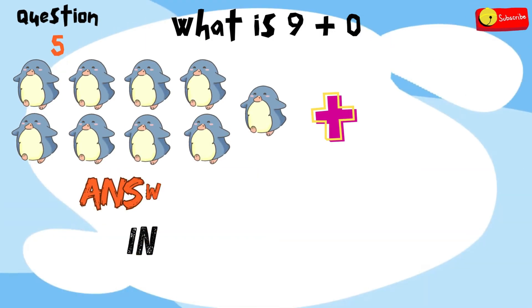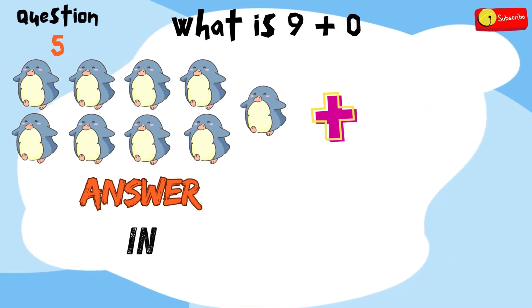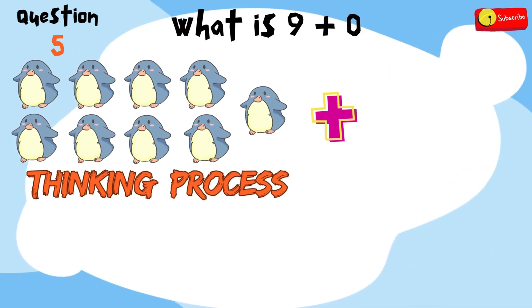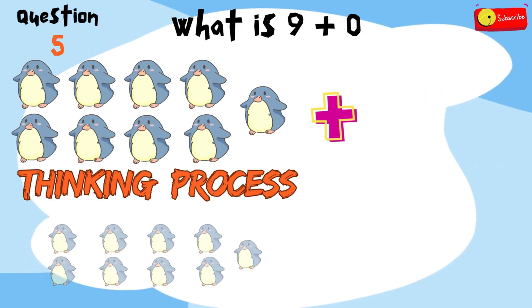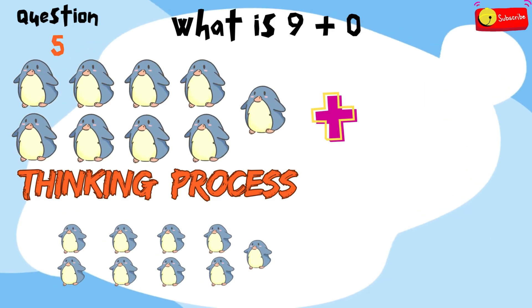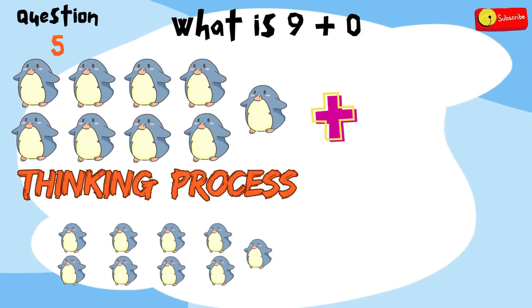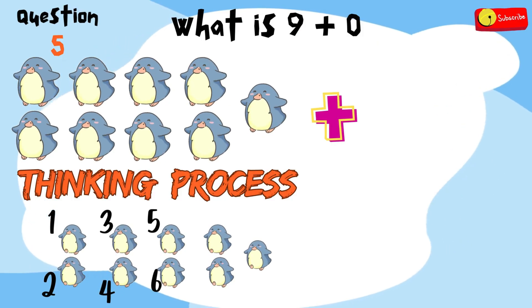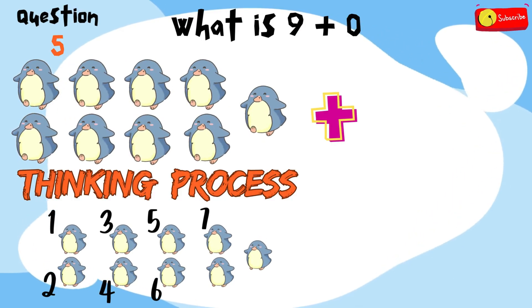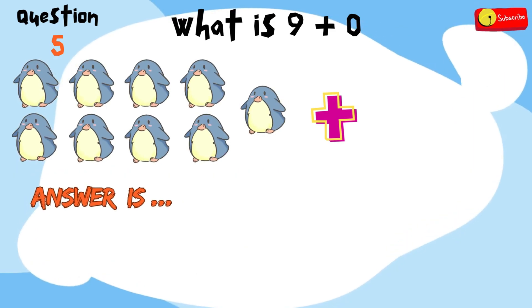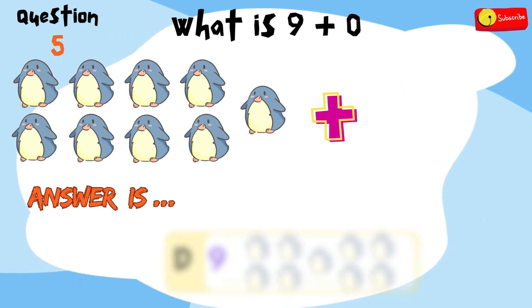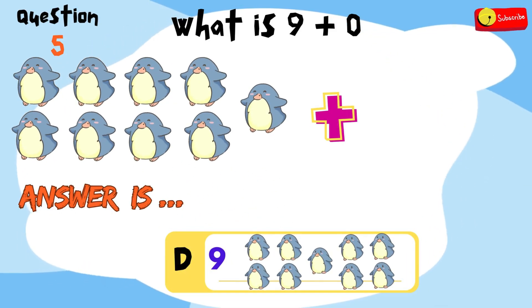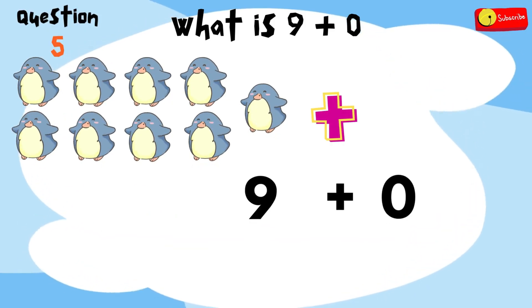All right, time's up! Here's the thinking process: if you have 9 penguins and we add 0 more, in total we get 1, 2, 3, 4, 5, 6, 7, 8, 9. So the answer is D — 9 penguins. So, 9 plus 0 equals 9.